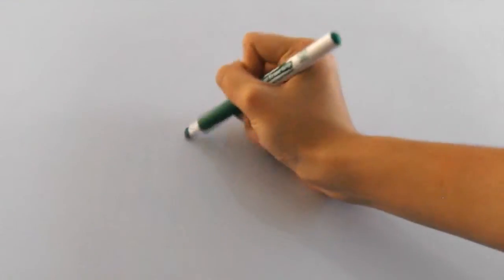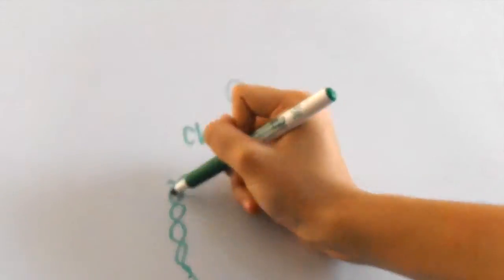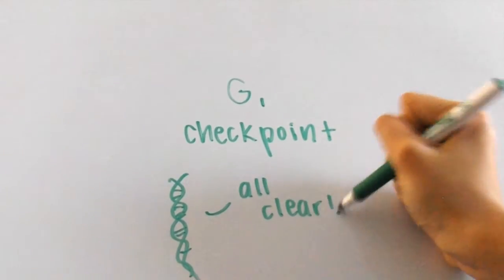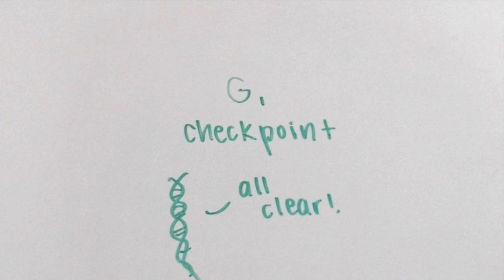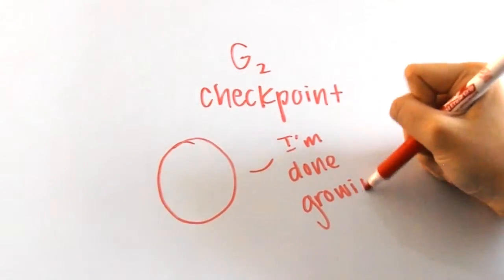Throughout the cell cycle, there are actually checkpoints that the cell needs to go through in order to proceed from one phase to the next. For example, the G1 checkpoint makes sure that the cell is prepared for DNA replication. The G2 checkpoint ensures that growth and replication are finalized and finished.